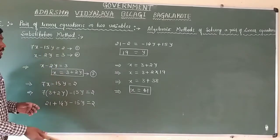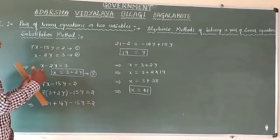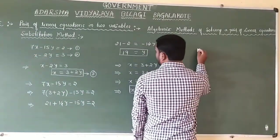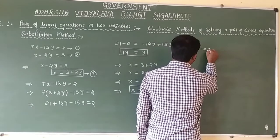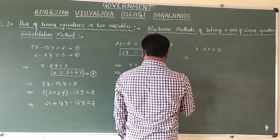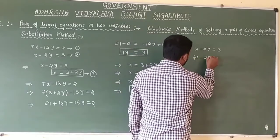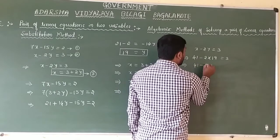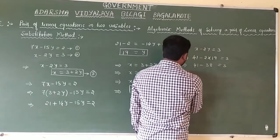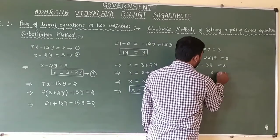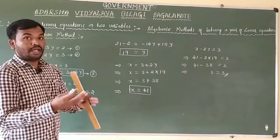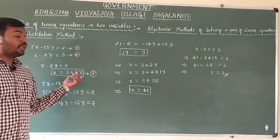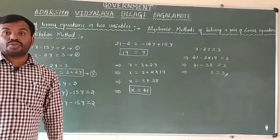We can find the values of x and y using the substitution method. To verify, substitute the values into one of the equations. Using x minus 2y equals 3: substituting x equals 41 and y equals 19 gives 41 minus 2 times 19, which is 41 minus 38 equals 3. Hence it is verified. You can also substitute into the first equation to verify. This is how we solve a pair of linear equations using the substitution method.